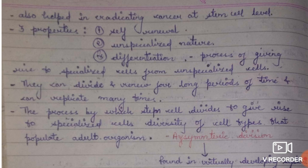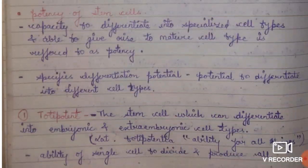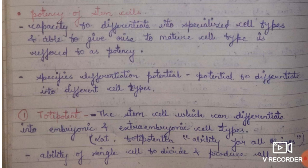Under this topic there is a subtopic: potency of stem cells. Potency is the capacity of a stem cell to differentiate and give rise to mature cells, which specifies its differentiation potential — the ability of a cell to generate different types of cells. Cells are divided into five types based on their potency: totipotency, pluripotency, multipotency, oligopotency, and unipotency.